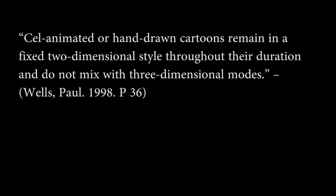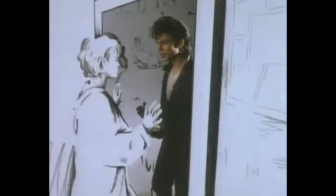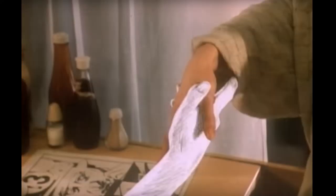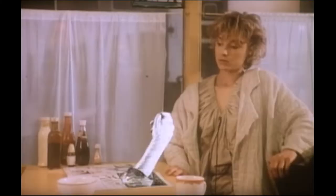The video for Take On Me contrasts with Wells' belief, which suggests that cell animation, which is seen as the most commonly produced form of cartoon, remains in a fixed, two-dimensional style throughout their duration and does not mix with three-dimensional modes. This particular feature of animation is displayed through the interaction between the male protagonist and a cartoon version of his female counterpart. The two interact physically, by staring at each other through an open doorway. The physical connection between 2D animation and 3D modes is also seen prior to the aforementioned scene, where the female protagonist ends up holding the hand of a cartoon character that arises from the table beneath her.